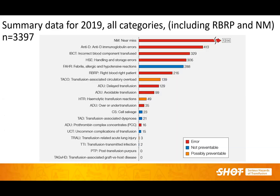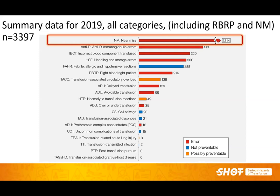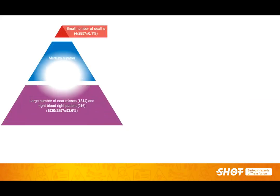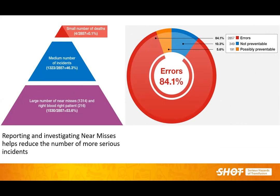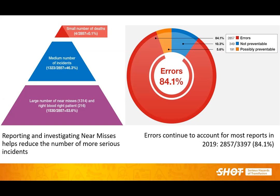Looking at the summary data for 2019, near misses continue to constitute the majority of reports — nearly 38.6%. They represent valuable learning opportunities. We also get steady reports of pathological reactions such as febrile, allergic, hypotensive reactions, and haemolytic transfusion reactions. Errors continue to account for more than 80% of reports consistently over the last few years. Largely the reports are near misses, and only a small number of deaths — around 0.1%. We can do better to improve our transfusion practices.